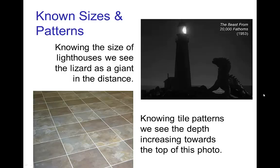Another visual cue for depth and distance is using known sizes and patterns. Knowing the size of lighthouses in this image, we sense that the camera is far away because we see a tall lighthouse and next to it a monster, which gives us a perception of it being a large monster. For known patterns, a common one would be tiling patterns — we realize that the top of the photo is farther away in the background compared to the bottom of the photo which is in the foreground.